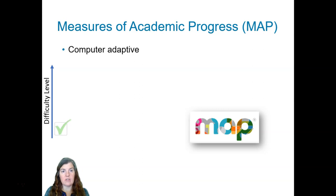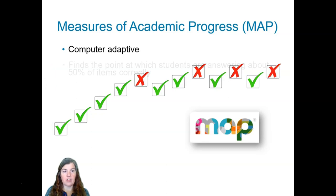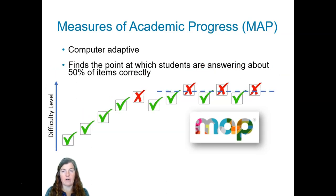Each question a student answers correctly will result in a more difficult item being presented. When a student answers questions incorrectly, the next item gets easier. So you can see the pattern that is emerging — it's looking to find the point at which students are answering about 50% of the items correctly. It's doing this because it's looking for the point at which students are ready for instruction. If a student can answer items at this difficulty level correctly nearly every time, this is too easy. If the student is never able to answer any of these items correctly, the difficulty level is too hard and the student is going to be frustrated. So if we can find that place at which students are able to answer about 50% of the items correctly, this is where the student is really ready for instruction and where a teacher can pinpoint to help a student grow.